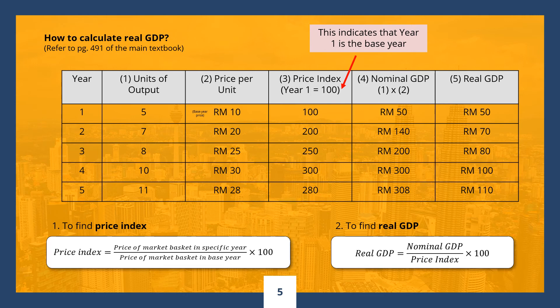Now, if we want to use the second method, we simply multiply each year's current output with the base year price. For instance, to find real GDP for year 4, we take the units produced in year 4 — that is, 10 — and multiply it with the base year price of RM10. This will give us a real GDP of RM100, which is exactly the same amount that we would have gotten by using the first method.